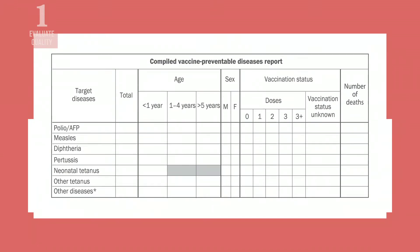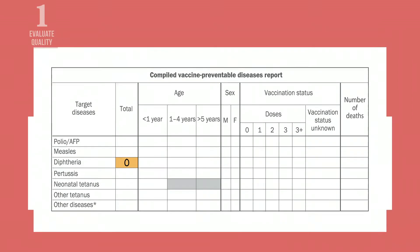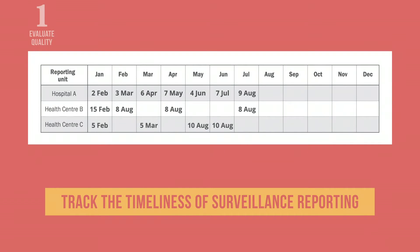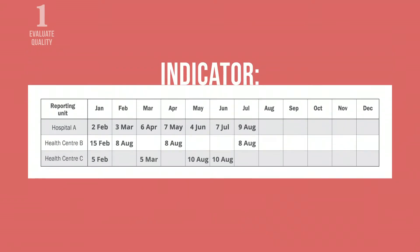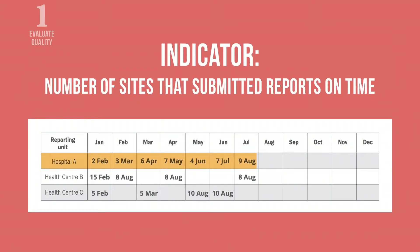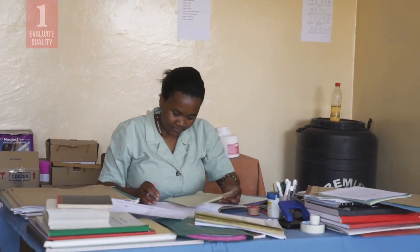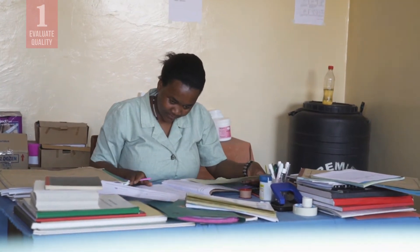A complete report would include zero reporting, where zero is filled in on the report form when no cases have been detected. Also, track the timeliness of surveillance reporting. Record how many and which sites submitted reports on time. The national level establishes clear deadlines for receiving monthly and weekly reports.